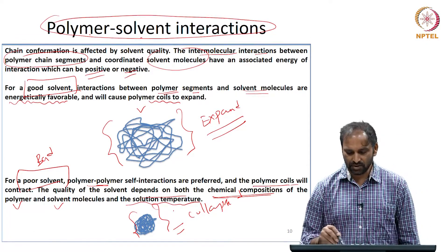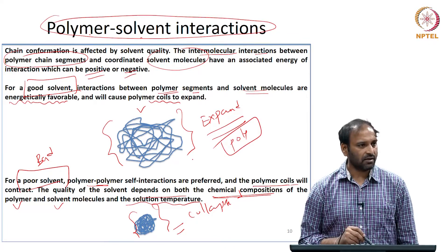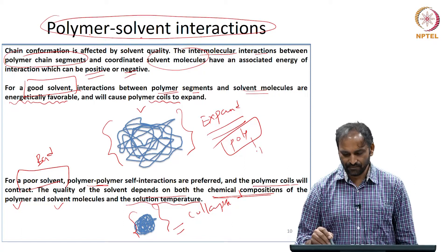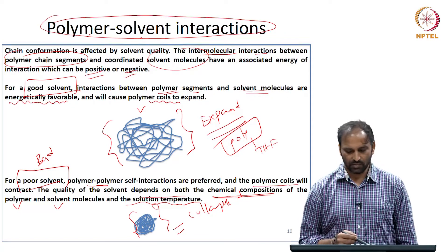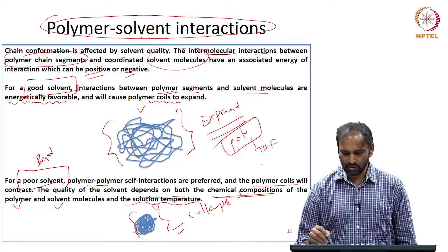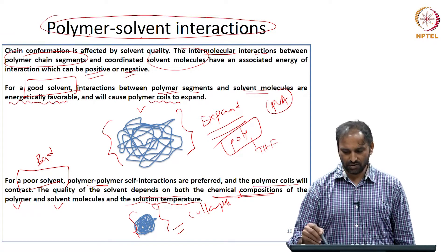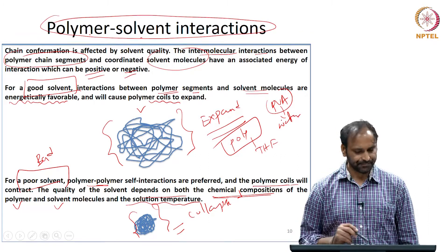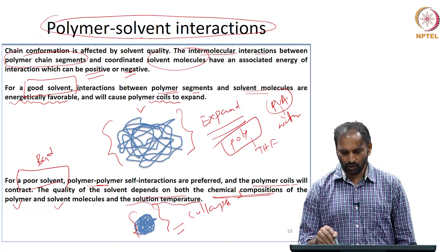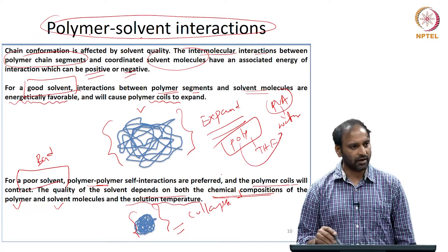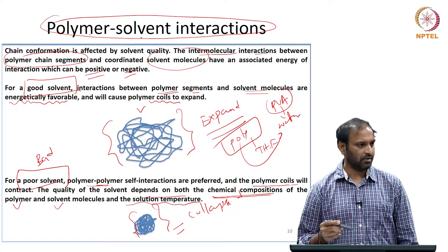For polystyrene, the good solvent is THF. For PVA (polyvinyl alcohol), a good solvent is water. At the same time, if polystyrene is put in water, it will collapse — water is a poor solvent for polystyrene.